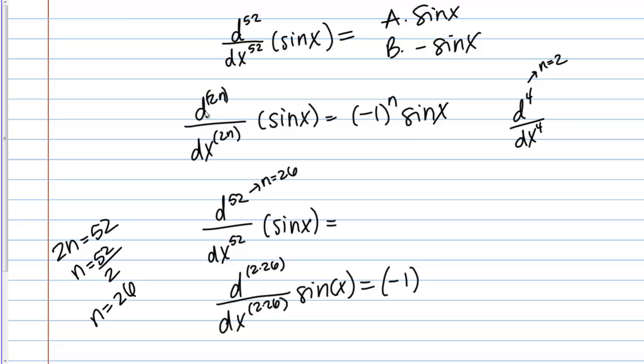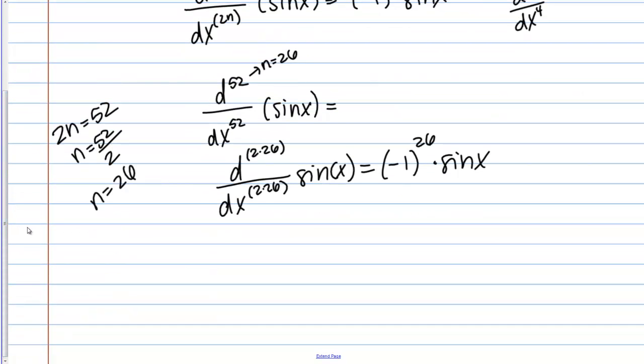We know that N is 26, we just figured that out. What is negative 1 to the 26th? Negative 1 to any even power is going to be positive 1, like negative 1 squared, negative 1 to the 4th, those are all positive 1. This is going to be 1 times sine x.